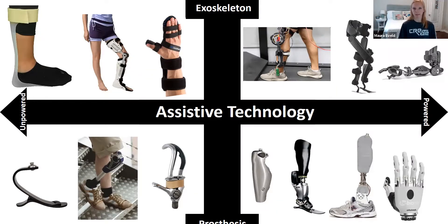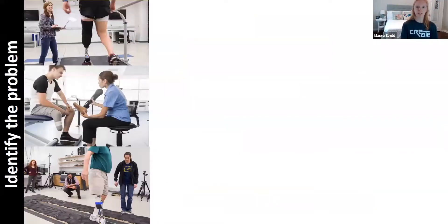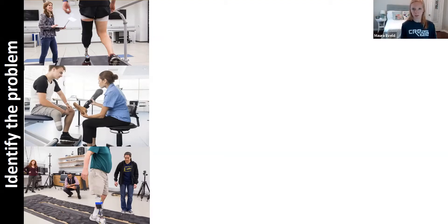With all of these different types and variations of assistive tech out there, you might be wondering: what is the process for designing and developing these devices? As biomechanics researchers, we have many roles we can play. First, we need to identify the problem. By talking with potential end users, such as prosthesis users or stroke patients, we can gain insight on what mobility issues these populations are facing. We also work with clinicians, such as physical therapists or prosthetists, to understand the current standard of care and how assistive technology can help.